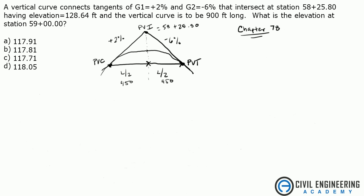Alright, welcome to Civil Engineering Academy. Today we're solving a problem from transportation. The problem states a vertical curve connects tangents of grade 1 of 2% and grade 2 of -6% that intersect at station 58+25.8, having an elevation of 128.64 feet. The vertical curve is to be 900 feet long. What is the elevation at station 59+00?